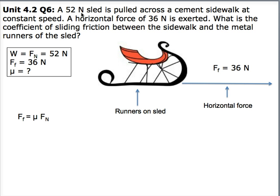W equals Fn, which equals 52 Newtons, which is the weight of the sled, and the force of friction is 36, which is the horizontal movement of the sled. We're currently trying to find the coefficient of friction.